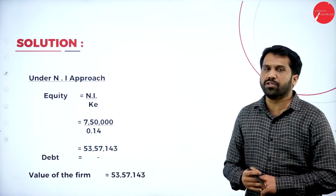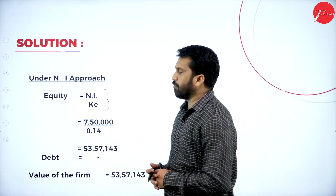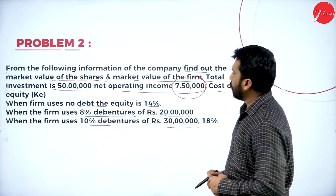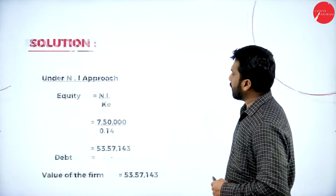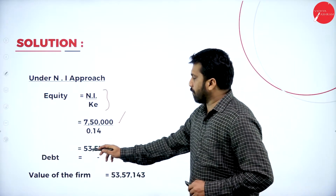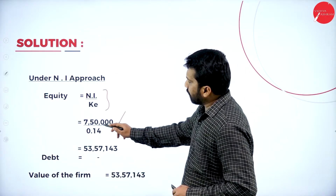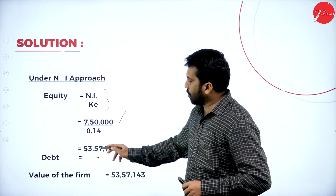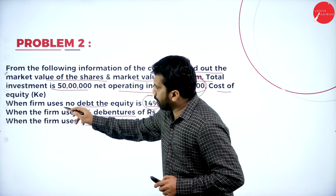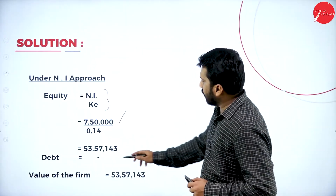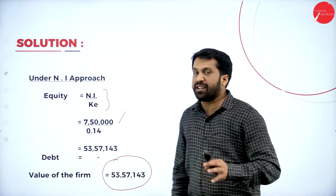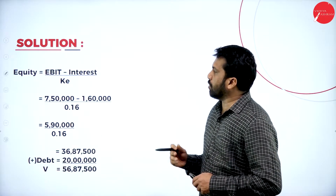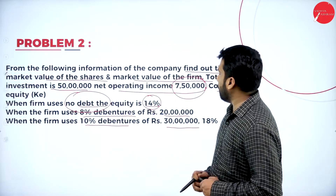Under the NI approach, value of equity = NI ÷ cost of equity. Net income given is 7,50,000 and cost of equity for the first case (no debenture) is 14 percent. So 7,50,000 ÷ 0.14 = 53,57,143. Since the firm uses no debenture, debenture = 0. Therefore, value of the firm = 53,57,143.